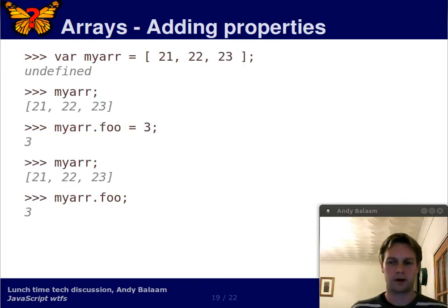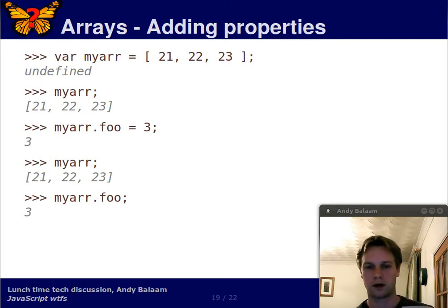So, let's take a look at what happened. I'll try and explain it. So, the real WTF here is that Firebug is lying. On the second last line, when you ask Firebug what's in myArror, what's actually in myArror is 21, 22, 23, and the property foo with the value 3.